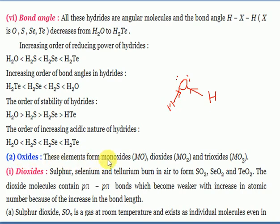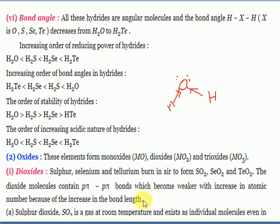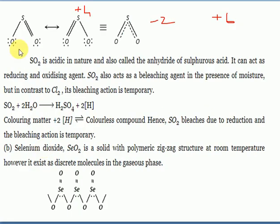Regarding oxides: these elements form variable oxides - MO, MO₂, MO₃ (monoxide, dioxide, trioxide). Sulfur, selenium, and tellurium burn to form SO₂, SeO₂, and TeO₂ respectively. These dioxide molecules can form pπ-pπ bonds. Sulfur dioxide is a gas at room temperature with 2-center 3-electron bonds possible.